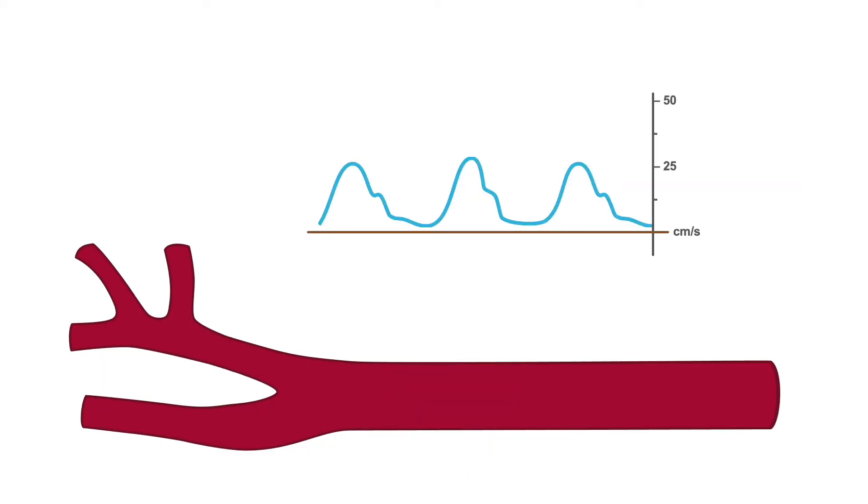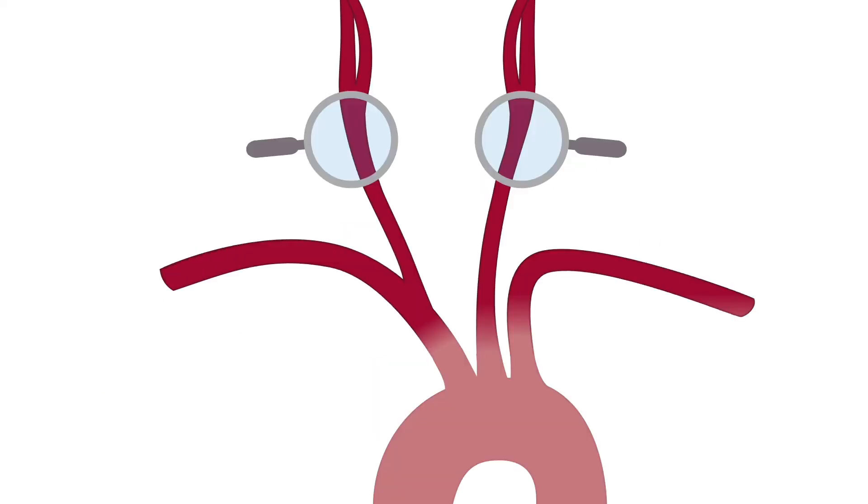Additionally, a very low velocity waveform in the CCA may be observed. Proximal disease would be suspected if this occurs in one artery only. But if observed in both CCAs, this may indicate significant aortic arch disease.